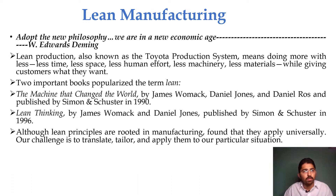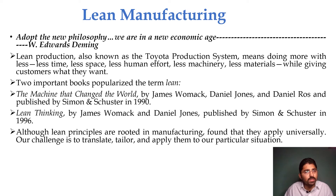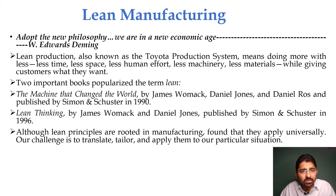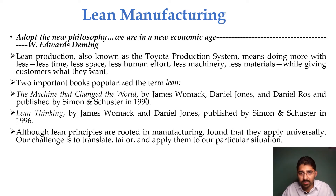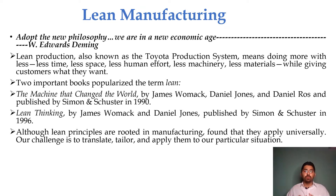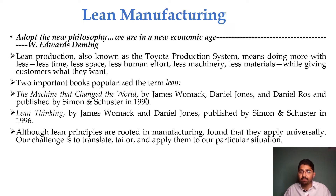So what is lean? We have adopted this new philosophy — we are in a new economic age. This was a statement given by W. Edwards Deming. Lean production, also known as the Toyota Production System, means doing more with less time, less space, less human effort, less machinery, and less material while giving customers what they want. There are two important books I recommend to understand lean, which I personally have read.